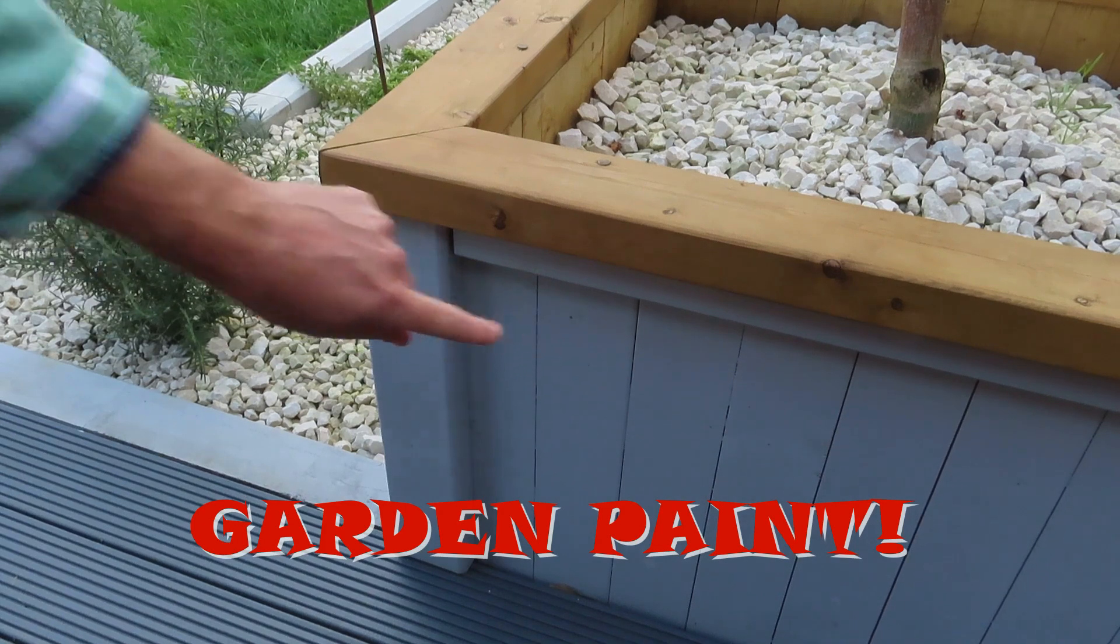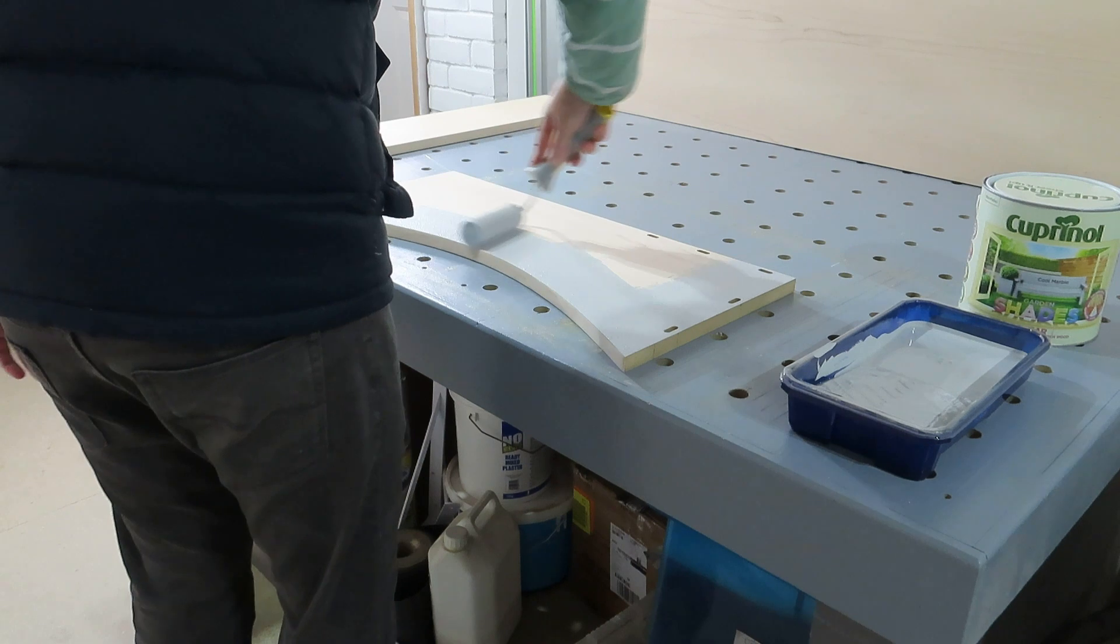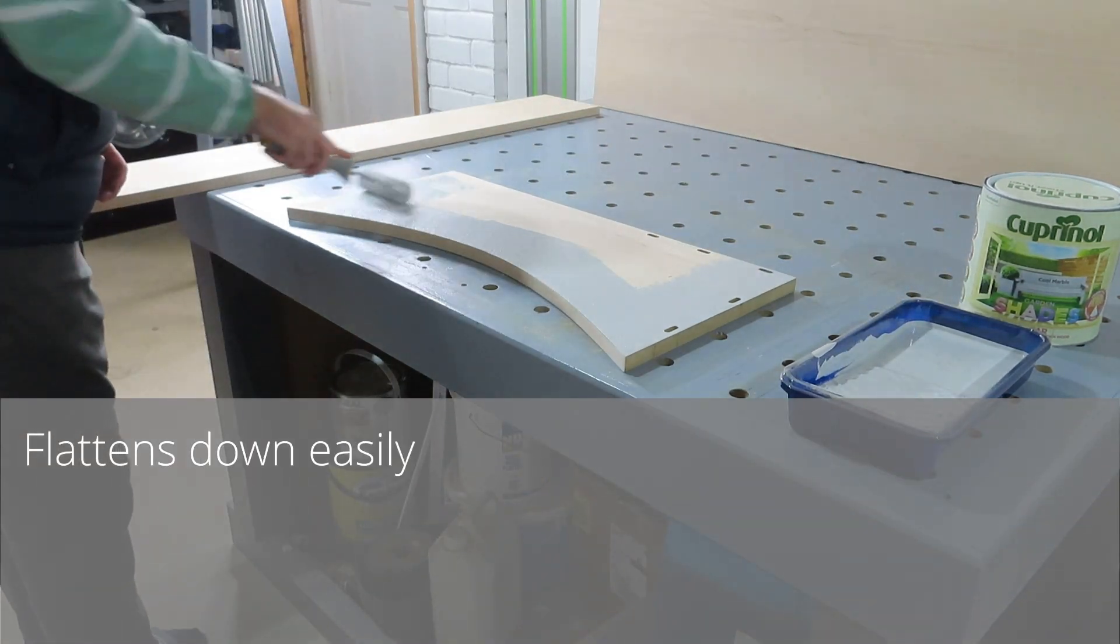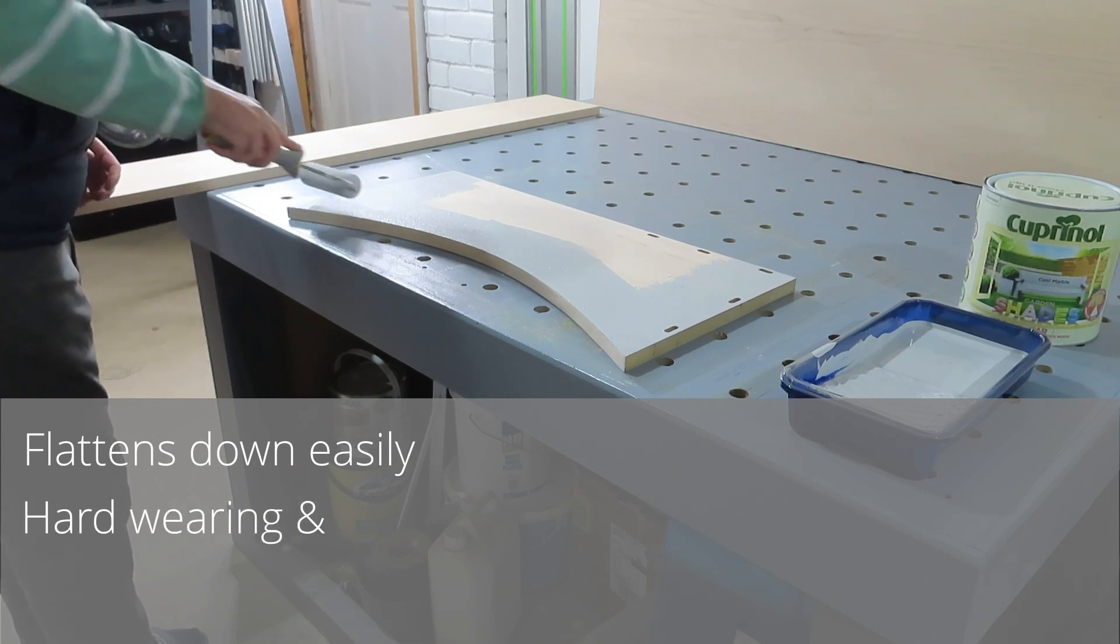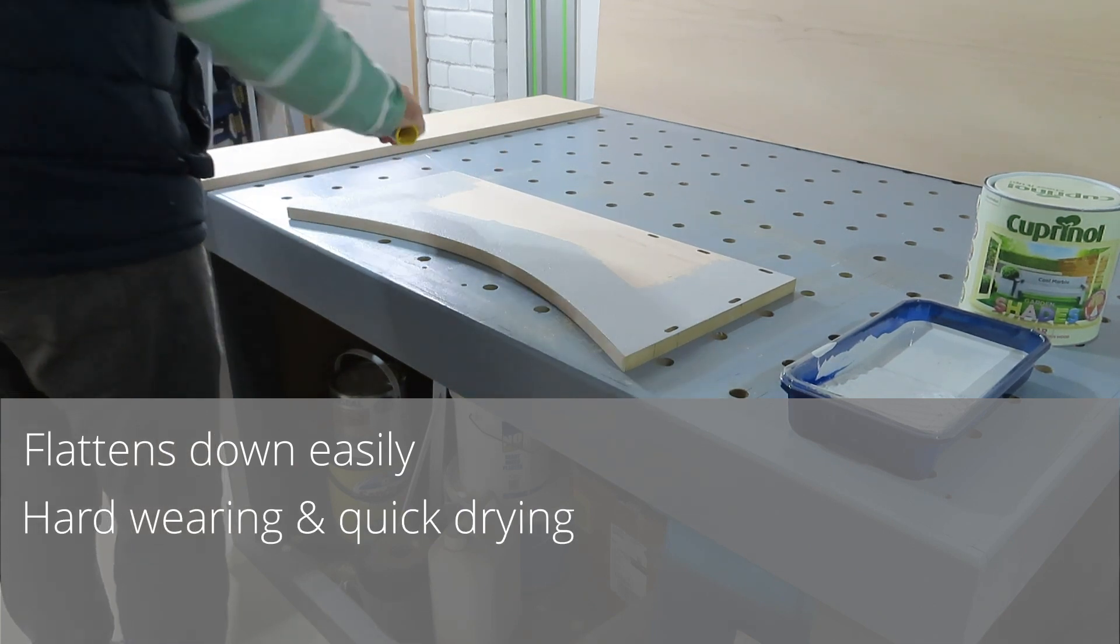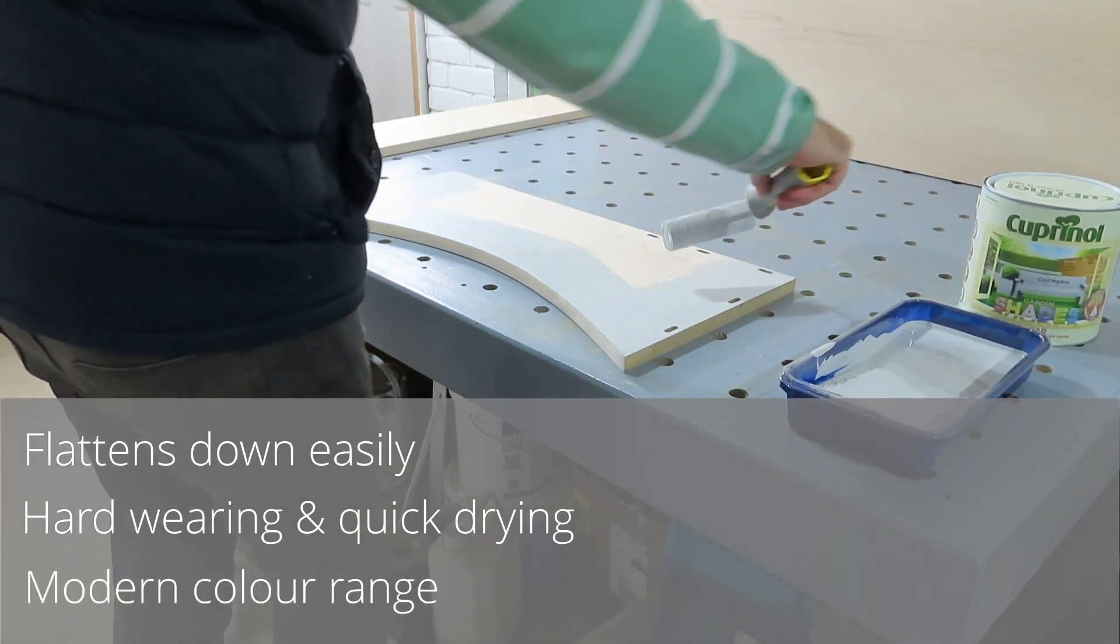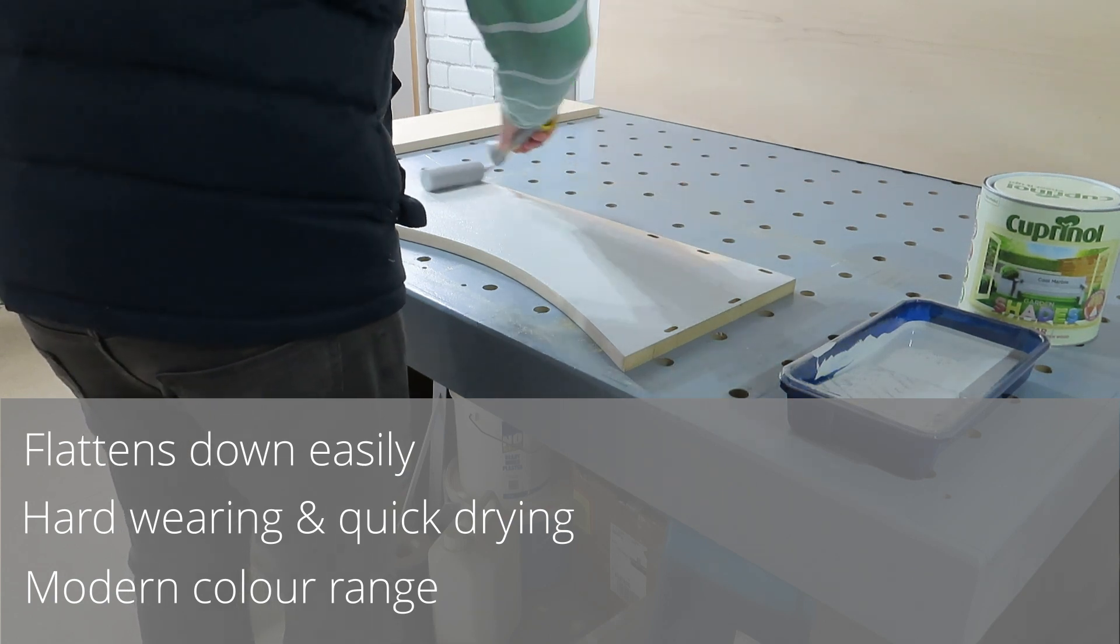To be fair, that last example was actually in the garden. But in all honesty, I really like putting this stuff on furniture. It's got a very watery consistency, which means it flattens out almost instantly and gives you a really smooth finish. Because it's meant for outdoor use, it's also extremely hard-wearing, and being water-based, it dries very quickly. I also find with these outdoor paints they have really modern color ranges and they're constantly being updated.